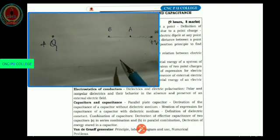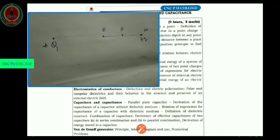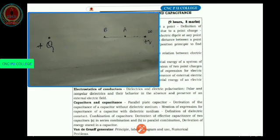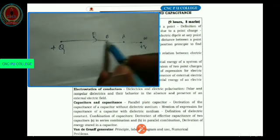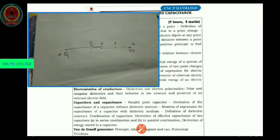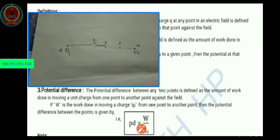Whatever work we are going to do, that work done will be stored as potential energy and we are calling it electric potential energy. Electric potential energy is not the same at all points — it varies from one point to another, because the source charge produces an electric field that varies inversely with the distance. Hence, the work done to move a test charge from infinity to different points will be different. So now it is time to understand the definition of electric potential energy.